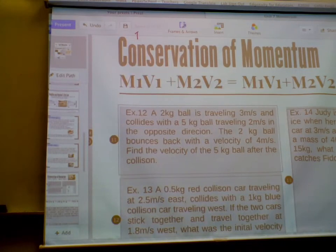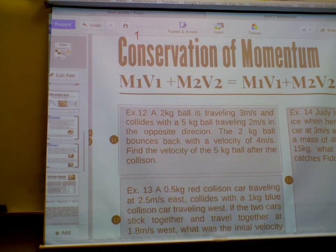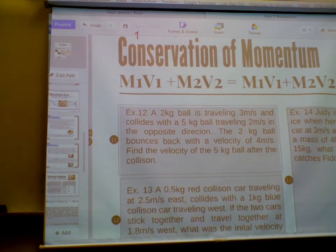Okay, a 2kg ball is traveling at 3 meters per second and collides with a 5kg ball traveling 2 meters per second in the opposite direction. The 2kg ball bounces back with a velocity of 4 meters per second. Find the velocity of the 5kg ball after the collision.